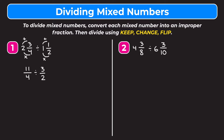Keep change flip means: keep the first fraction as it is — so we keep eleven-fourths — change division to multiplication, and flip the second fraction so three-halves becomes two-thirds. Before multiplying straight across, we check if we can simplify or cross-reduce. We can cross-reduce two and four by dividing both by two: four divided by two is two, two divided by two is one.